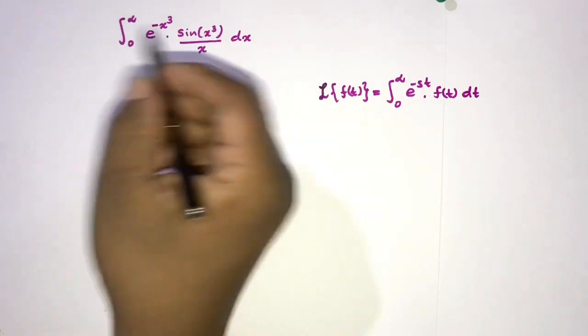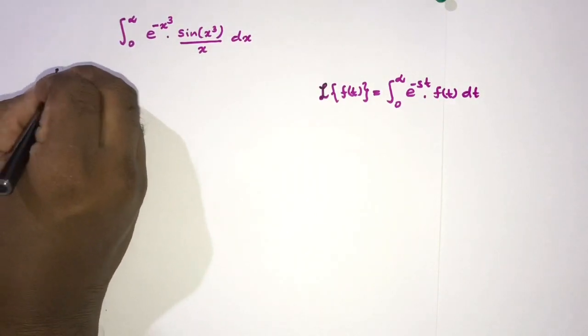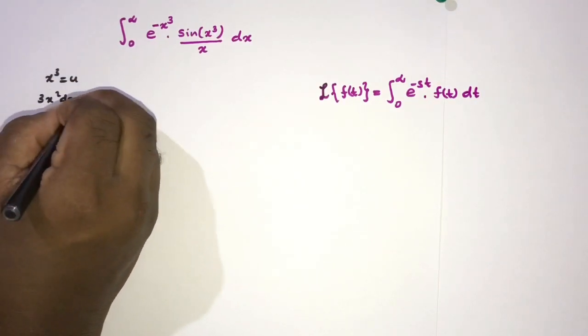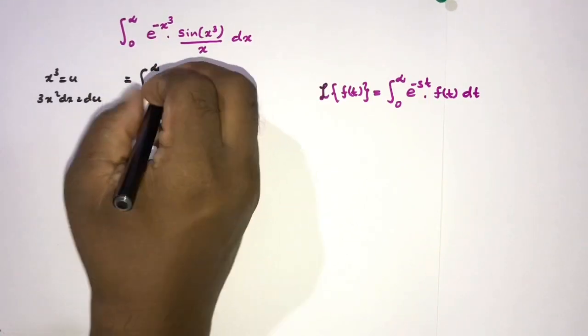x³ equals u, then differentiate: 3x²dx equals du. So now we can plug in. We know the limit is also 0 to infinity.